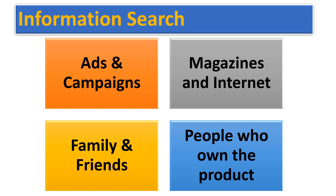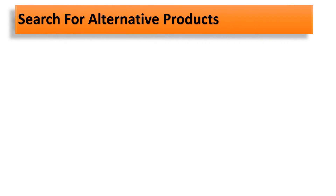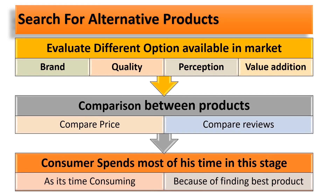After collecting all the information, the next step is evaluation of alternatives — searching for and comparing alternative products. This step involves evaluating different options available in the market based on factors like brand, quality, price, or perception. The customer may compare prices and read reviews of different products, then select the best one that satisfies their need. A consumer may spend most of their time in this stage because every customer wants to find the best product.